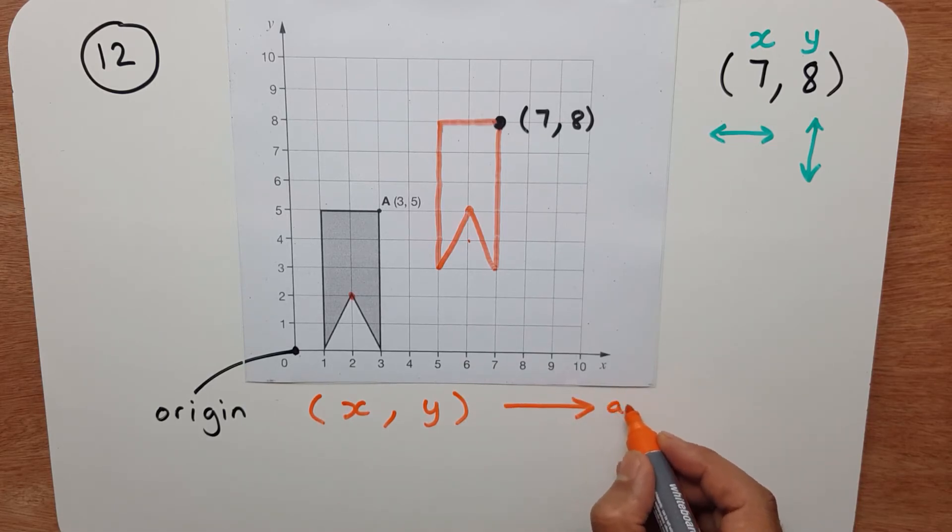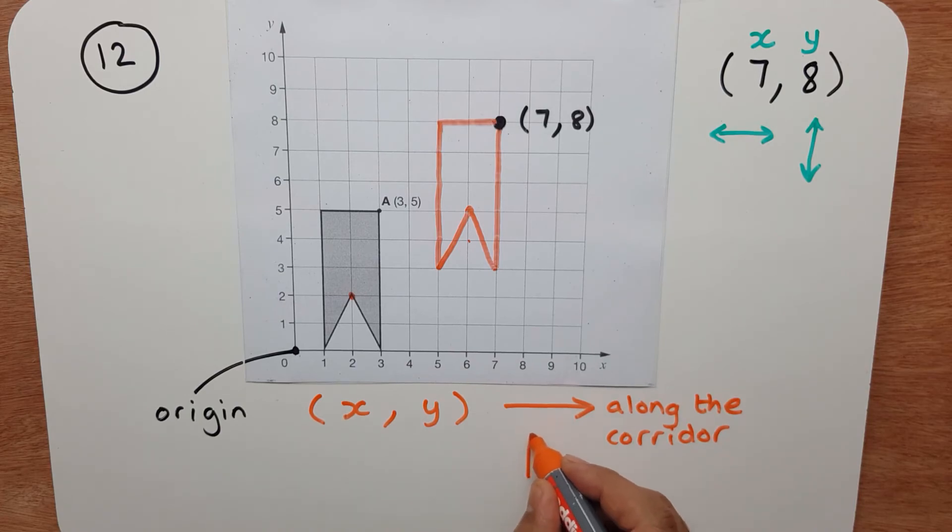so let me write that down. And y is up and down the stairs. And this is called a coordinate pair, so let me write that down here. And why is it a pair? Because there's 1, 2 parts to it. And remember it's always in alphabetical order, the x comes first and then the y.